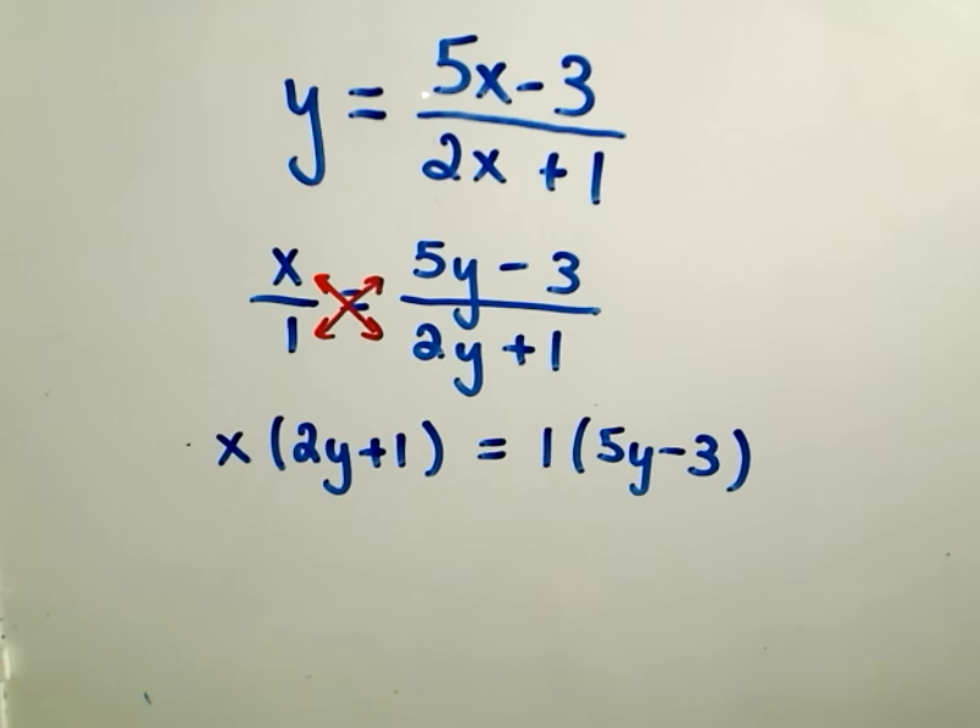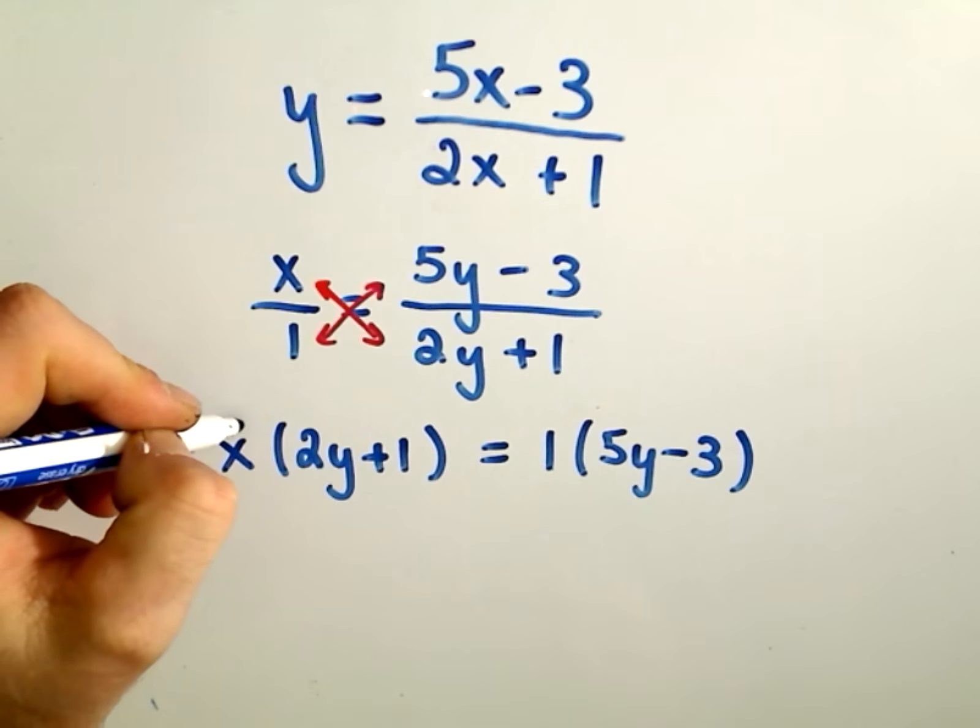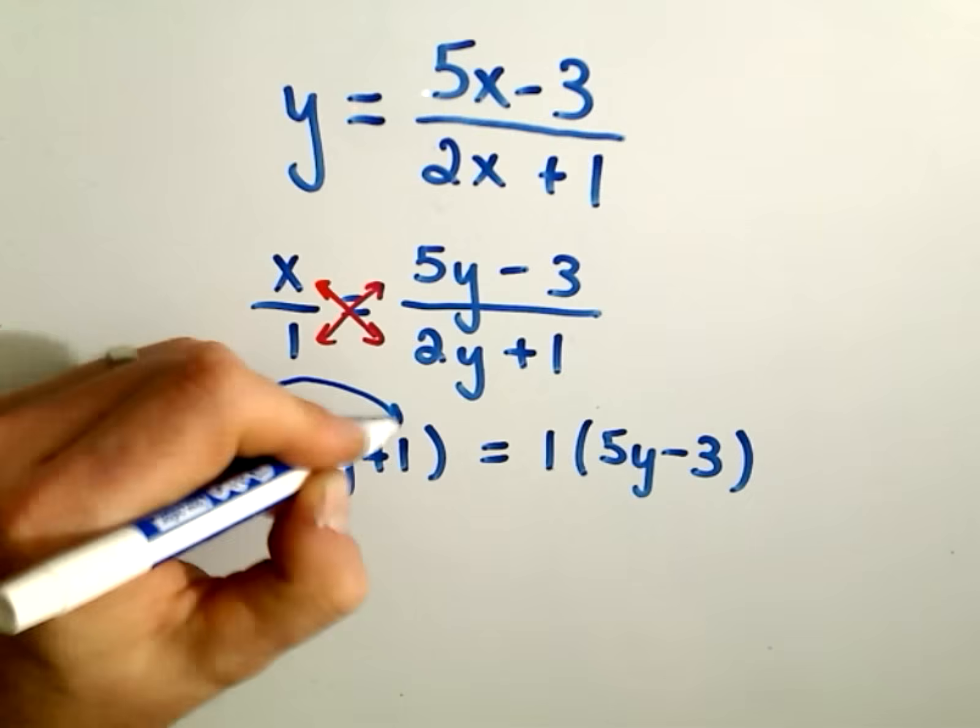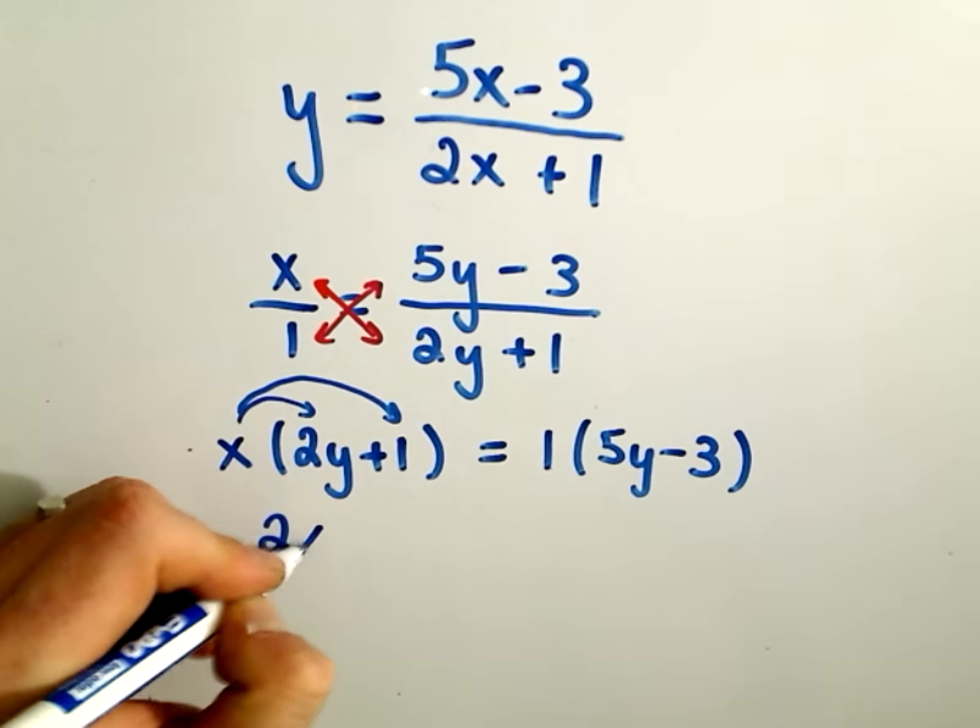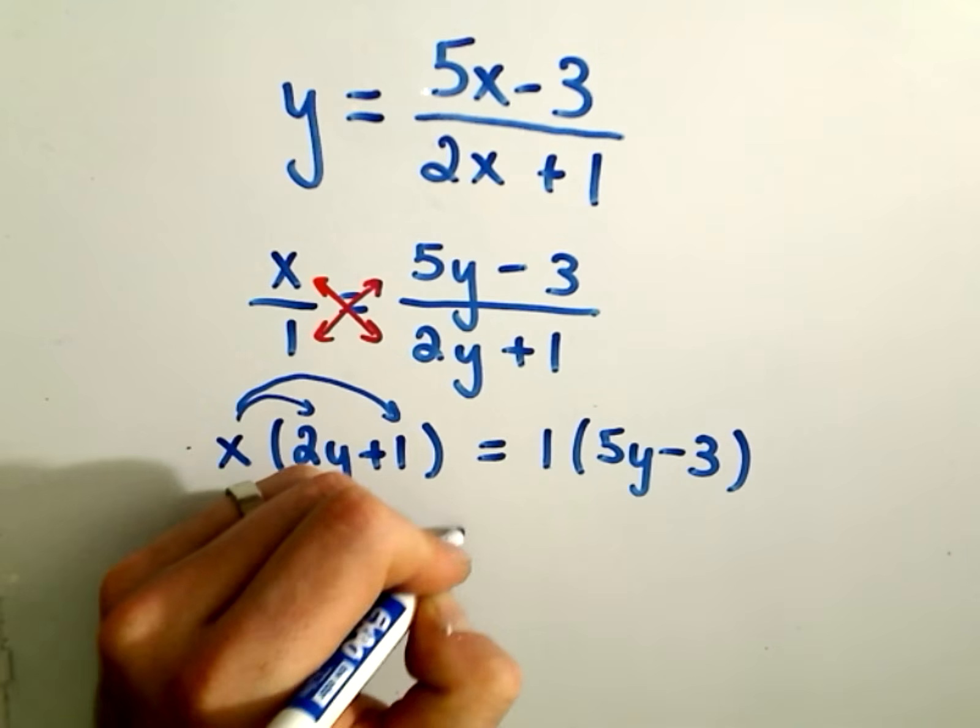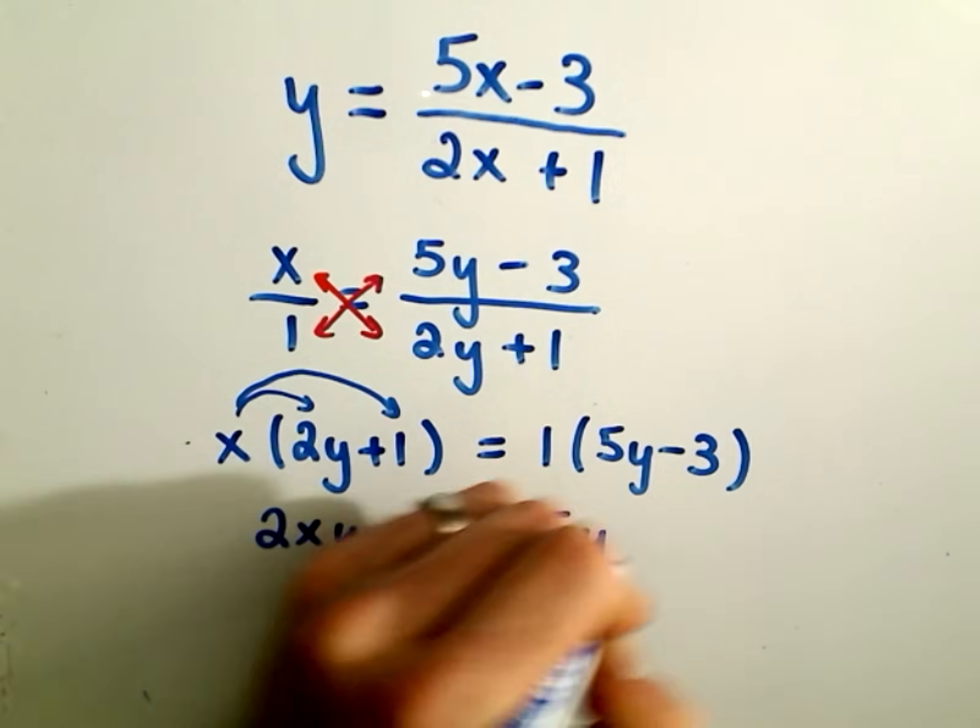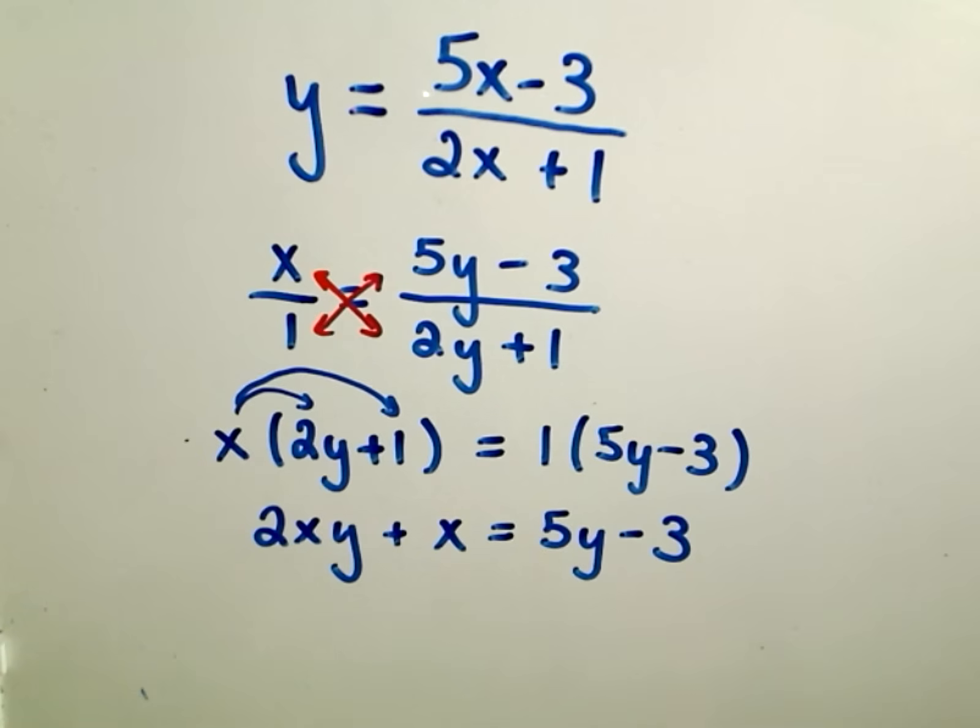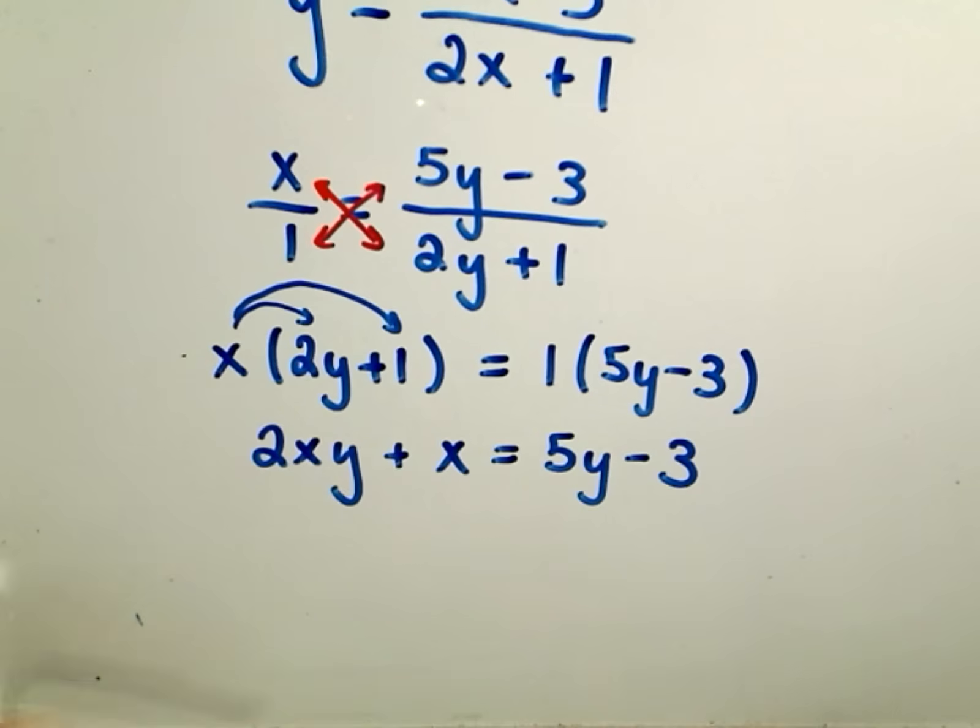So what I'm going to try to do is get all my y's on the same side of the equation. And to do that, I'm just going to distribute. So I'll get x times 2y, and I'm going to write that as 2xy. And then x times positive 1 is positive x. I distribute my 1, I'll just get 5y minus 3. Again, I want to put all my y's on the same side, so I'm going to subtract 5y from both sides.